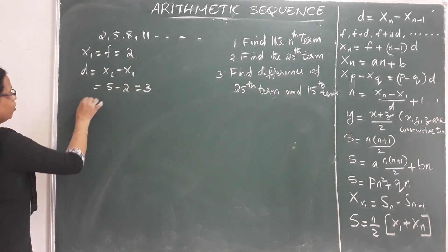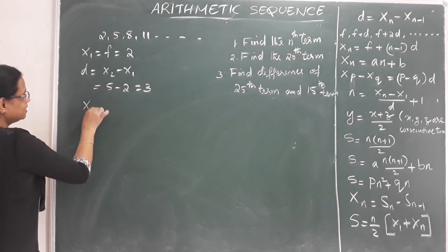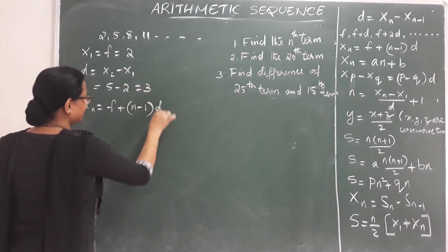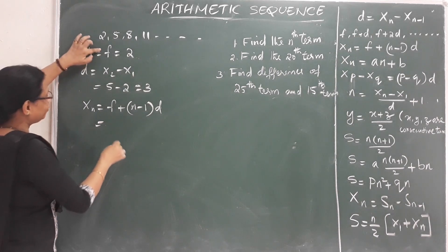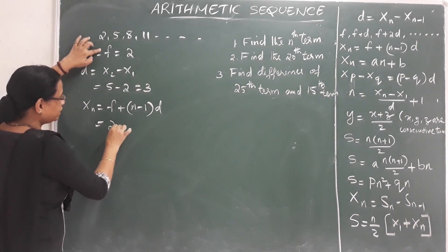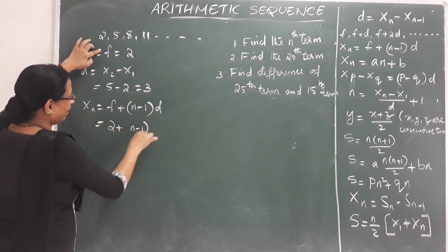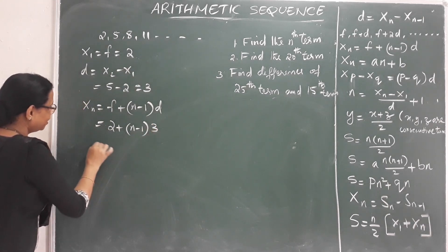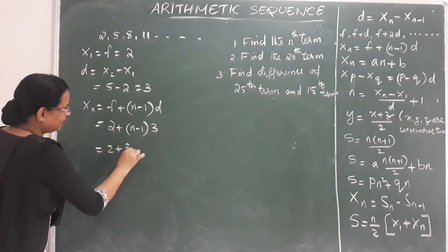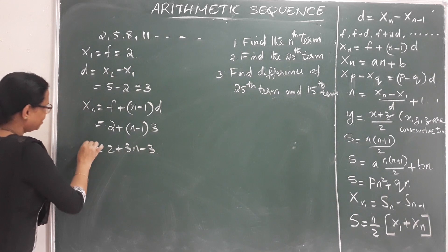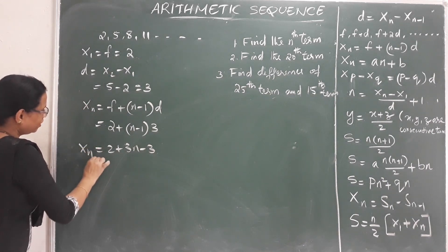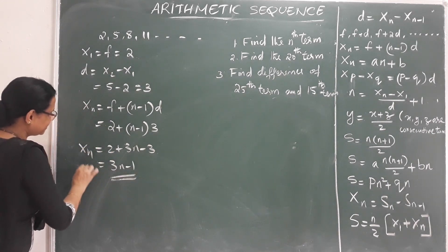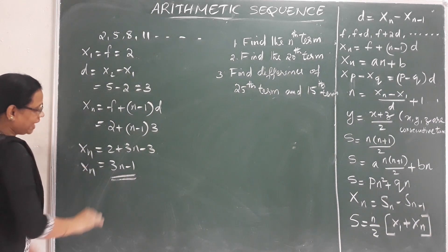The nth term formula is xn equals f plus (n minus 1) into d. Here, f is the first term 2, and d is 3. So xn equals 2 plus 3(n minus 1), which gives 3n minus 1. That is the nth term.